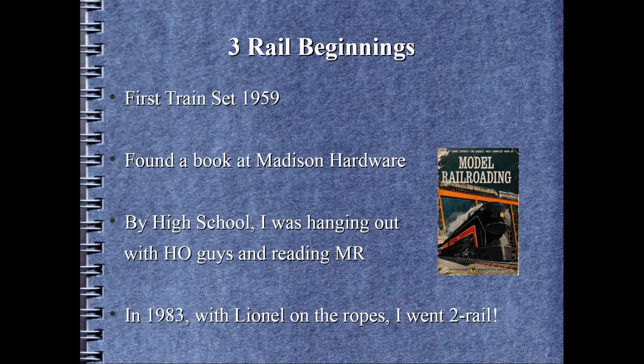By my teen years, I was reading Model Railroader, Model Railroad Craftsman, the occasional copy of O-Gauge Trains, and hanging with HO modelers. The 3rd rail and tubular track were annoying, but not enough to get me to jump to the smaller scale. By the early 1980s, Lionel had fallen on hard times, having been through several corporate owners — quality was poor, prototype fidelity was non-existent. The price of collectible post-war Lionel was nearly equivalent to 2-Rail O scale brass. With Lionel apparently not long for the world, I made the jump into O scale 2-Rail.